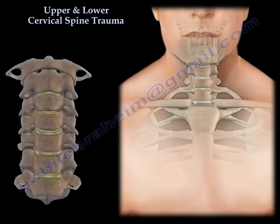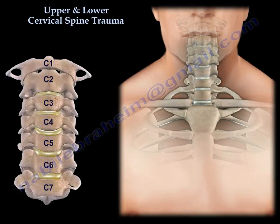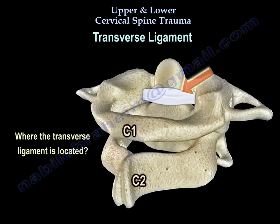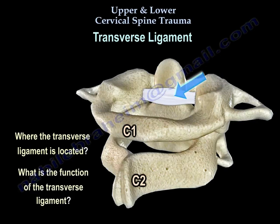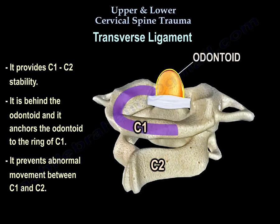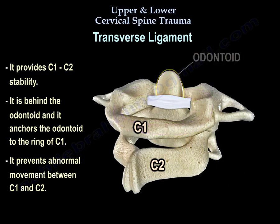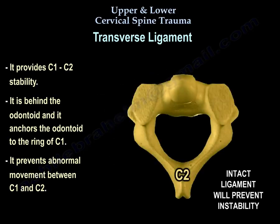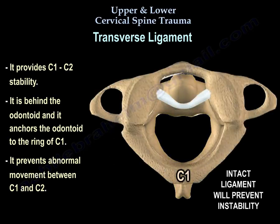C-spine trauma. The first thing we're going to talk about is the transverse ligament — where it is located and what its function is. It provides C1-C2 stability. You can see it is behind the odontoid, and it anchors the odontoid to the ring of C1, so it prevents abnormal movement between C1 and C2, because the spinal cord is behind the odontoid, behind C2.